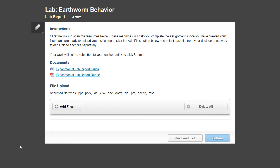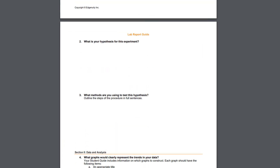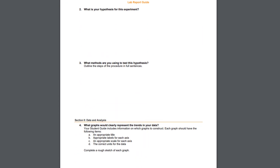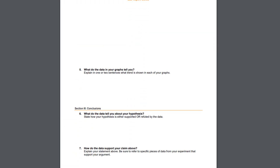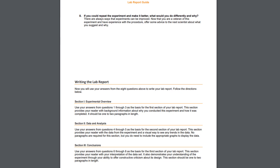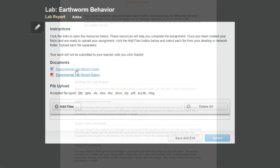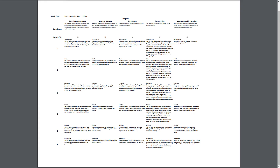The last activity for any virtual lab is the lab report. This activity provides a link to the lab report guide to give directions and support students through its completion. The guide includes information about the scientific process and suggestions for charts and graphs relevant to scientific data collection. Each lab report also includes a rubric for additional student support, which can be useful when reviewing your student's work.